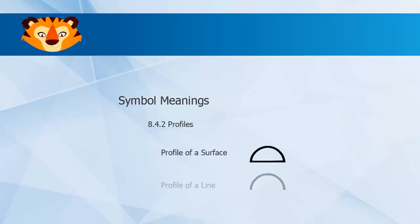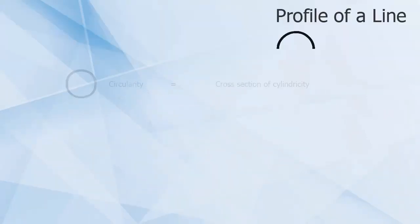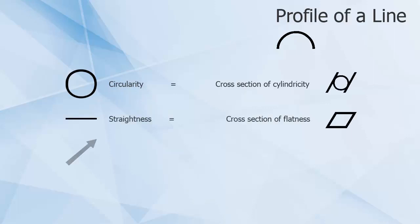Now we'll look at Profile of a Line. Circularity is a cross-section of cylindricity. Straightness is a cross-section of flatness. Circular run-out is a cross-section of total run-out.